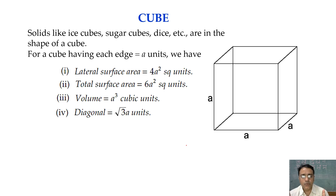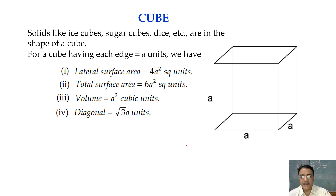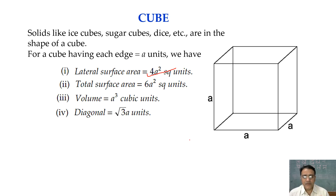The area of four walls of a cuboid — the lateral surface area — is 2(L + B) × H. The area of four walls of a cube is 4a². Remember: lateral surface area equals perimeter of base times height.